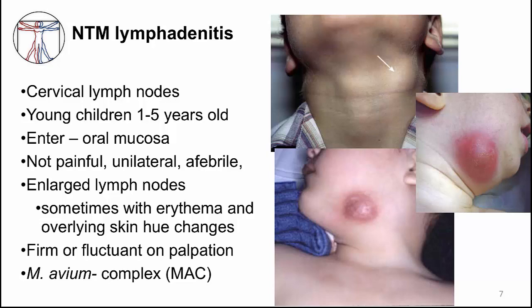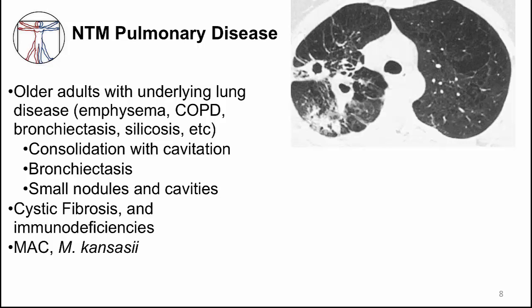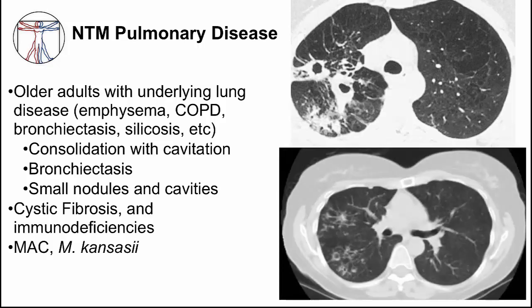Pulmonary disease from NTM can occur in people who are immunocompetent and immunocompromised. Immunocompetent people with pulmonary NTM have some risk factor predisposing them to infection. Many older adult males have some underlying disease — for example, bronchiectasis, where the airways are flabby and scarred from damage and can't clear secretions well. On chest imaging, consolidation with cavitary lesions can be seen that resemble tuberculosis, as shown in the top chest CT scan. Sometimes nodules and smaller cavities occur, as seen in the bottom CT scan.